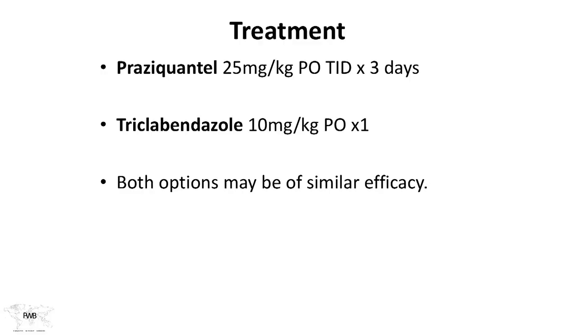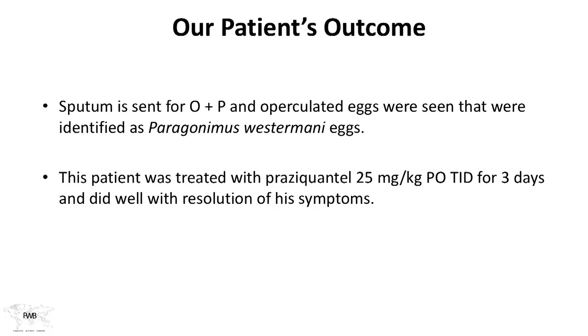For treatment, we use praziquantel, and triclabendazole is also effective. When compared, both options have similar efficacy. Triclabendazole is a one-time dose, while praziquantel requires three times a day for three days. Our patient had sputum sent for ova and parasites, and operculated eggs were identified as Paragonimus westermani. He was treated with praziquantel, 25 milligrams per kilogram, three times a day for three days. He did well, with resolution of the hemoptysis.